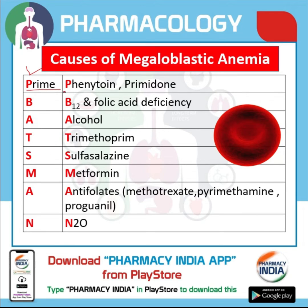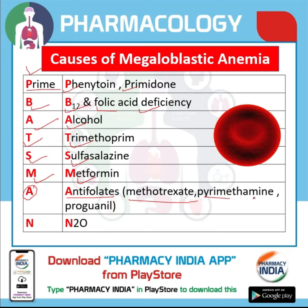P of Prime denotes phenytoin. B denotes B12, that is vitamin B12 and folic acid deficiency. A denotes alcohol. T denotes trimethoprim. S denotes sulfasalazine. M denotes metformin. And A denotes antifolates, that is methotrexate, pyrimethamine, and proguanil.